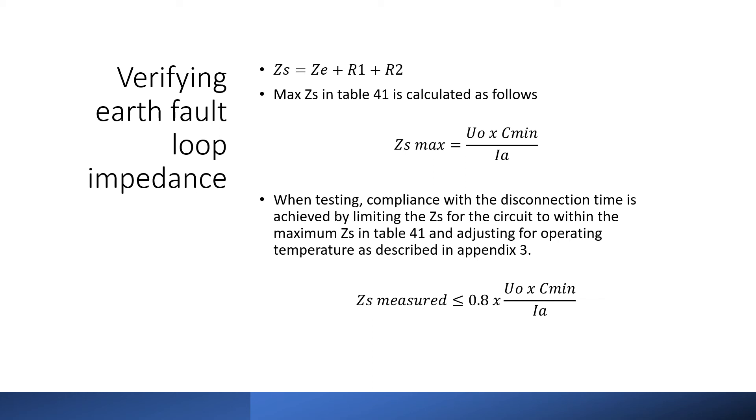So compliance is achieved when the measured ZS is less than 0.8 times UO times Cmin divided by IA. So in other words the values from Table 41 minus 20 percent. I explain maximum ZS on another video on my channel and I will add a link at the end of this video.